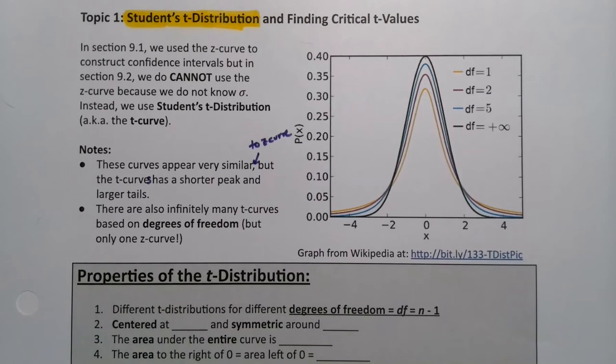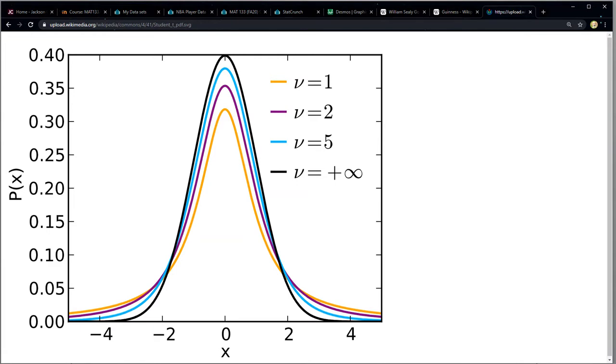You can see it better on the actual graph right here. See the black curve right there is the z curve, so it's got a really tiny tail, whereas the orange, the pink and the blue curves, those t curves have larger tails and then shorter peaks than the z curve.